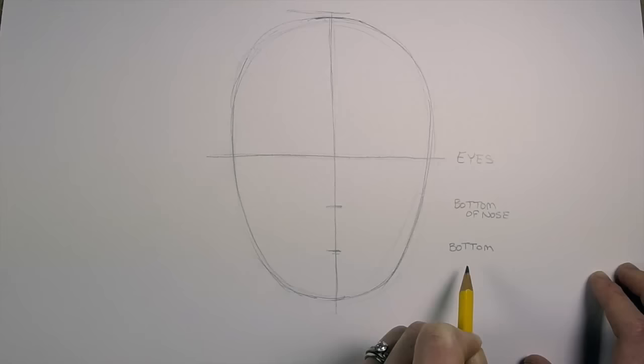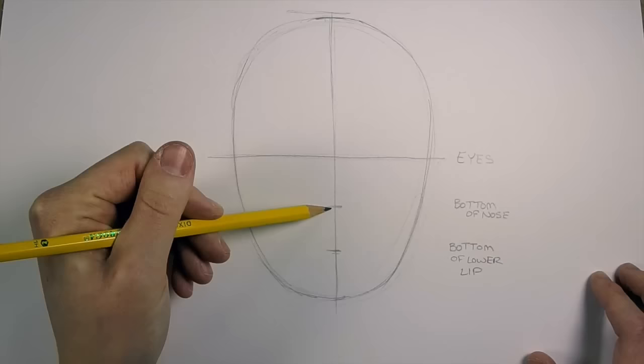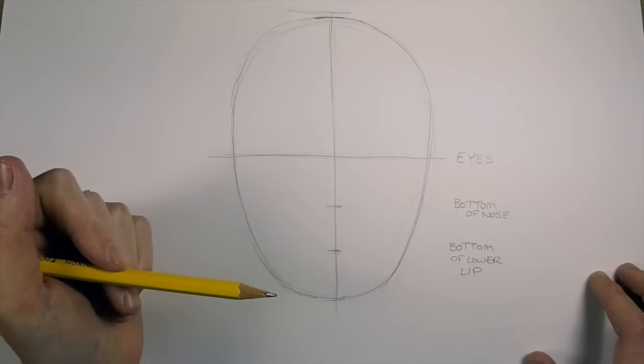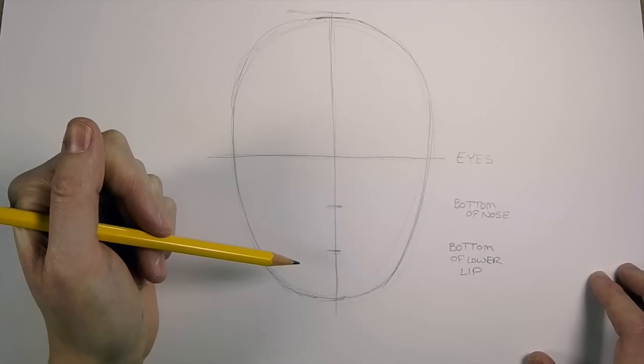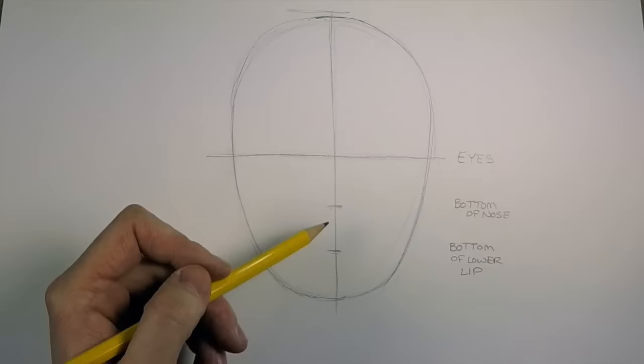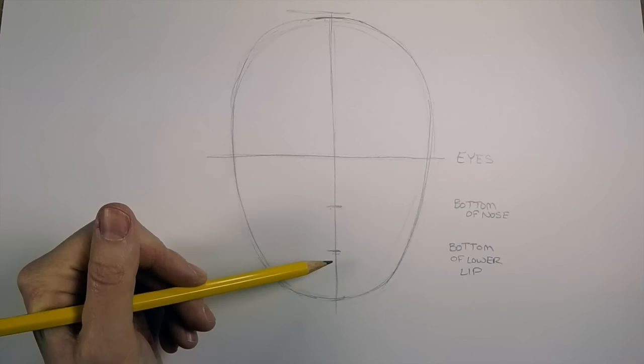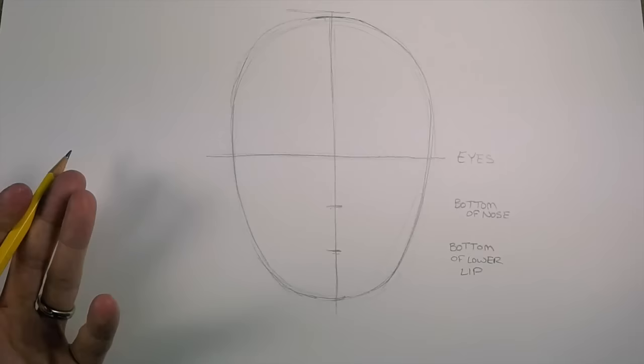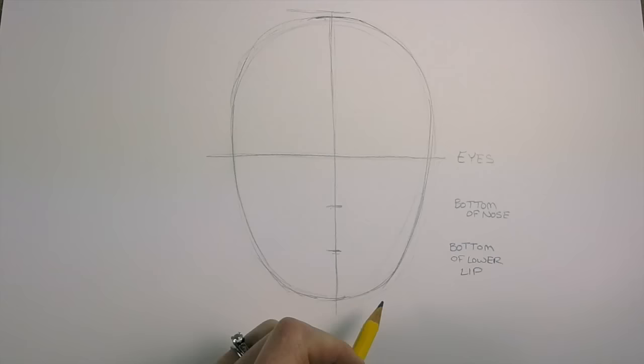For some people, the bottom of the nose may be halfway in between the eyes and the chin. On me, however, I have a smaller nose, so my nose is only about a third of the way between my eyes and my chin. It's important to be thinking about how your face is laid out, so this might be different. Your nose might be halfway between here, and then your lips are halfway between your nose and your chin—it just depends on your anatomy.